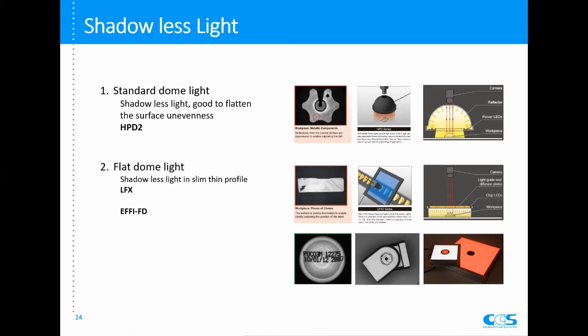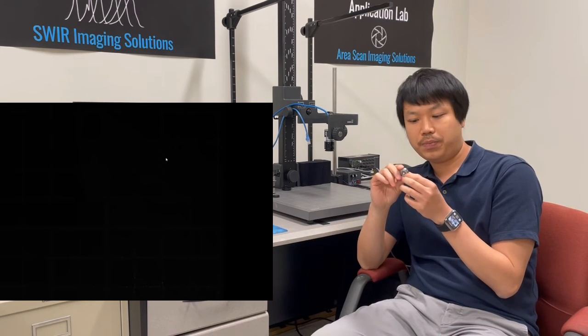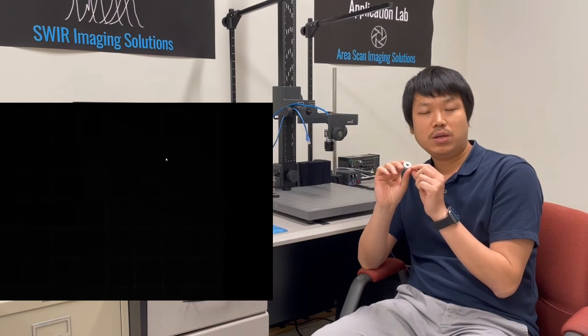This concludes the geometric lighting technique in machine vision. In the next section we will go into the lab. We will test some real samples and see how to use bright field, dark field, and shadowless light on real samples. The first sample is a ball bearing. The surface is really flat and slightly specular, and on top of the ball bearing there are date codes and product codes that we need to inspect.